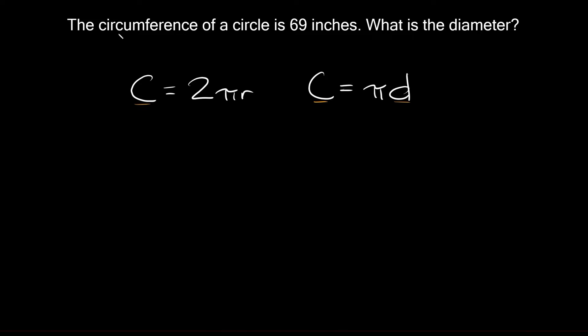So what do we know? Well the problem says that the circumference is 69 inches, so let's plug in 69 inches for the circumference. We know 69 inches equals π times the diameter.